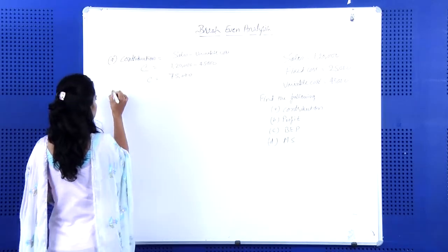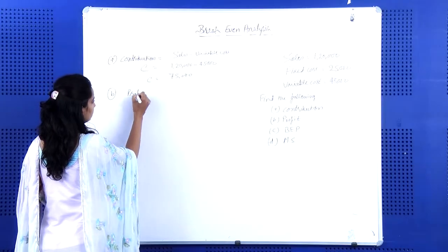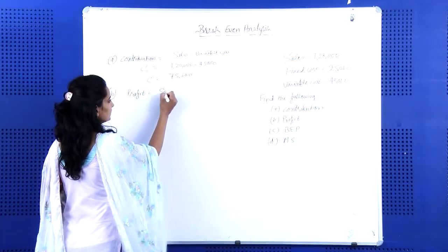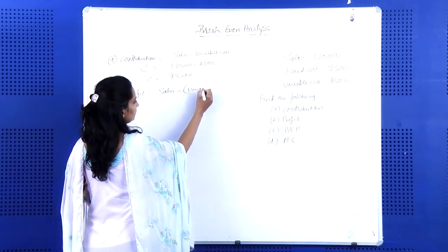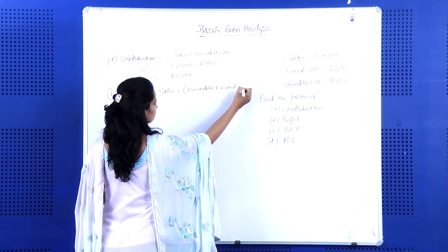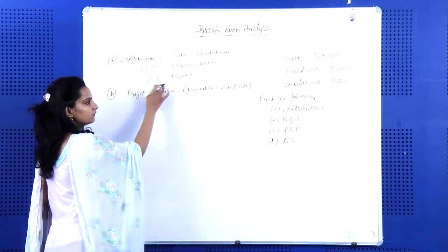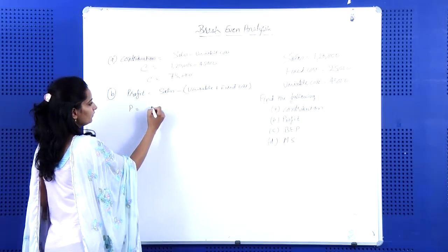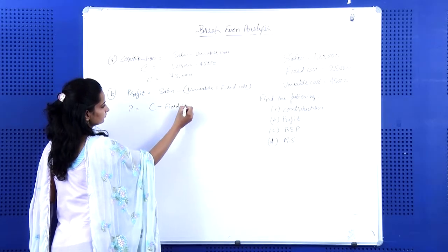The formula for profit is sales minus (variable cost plus fixed cost). Since sales minus variable cost equals contribution, we can calculate profit as contribution minus fixed cost.